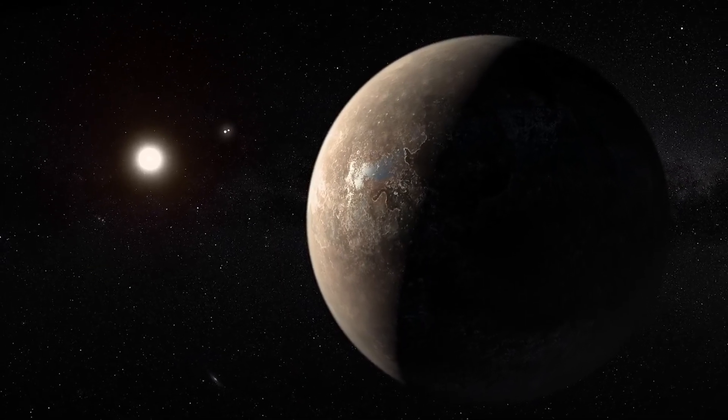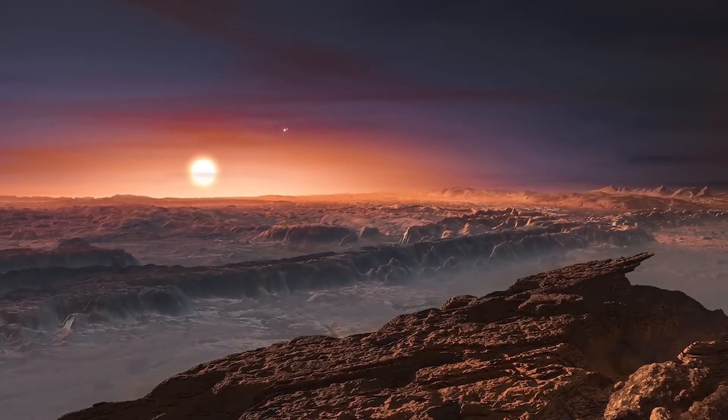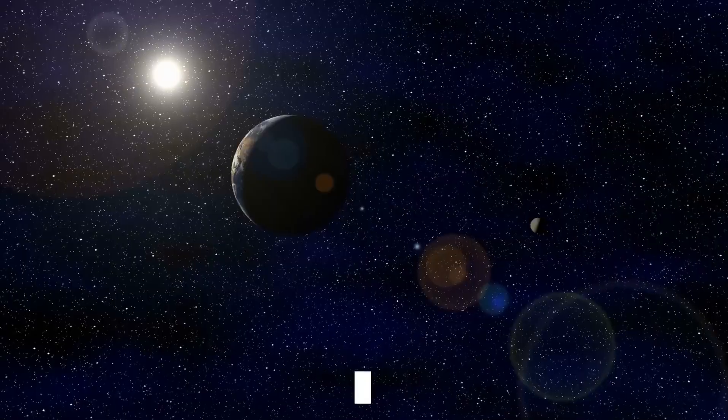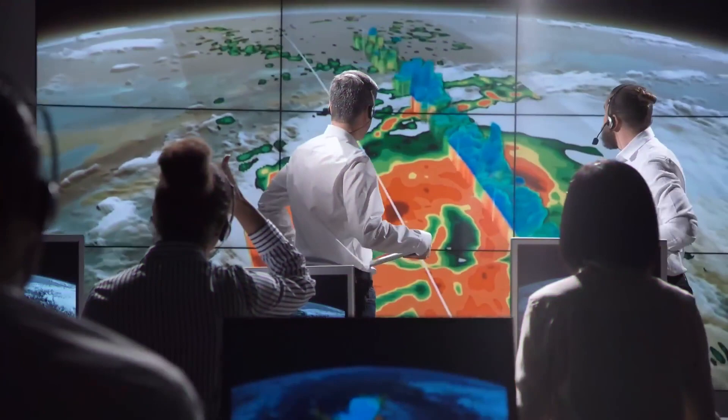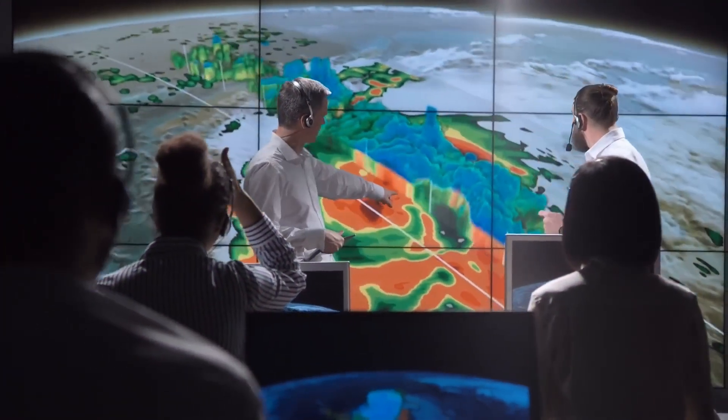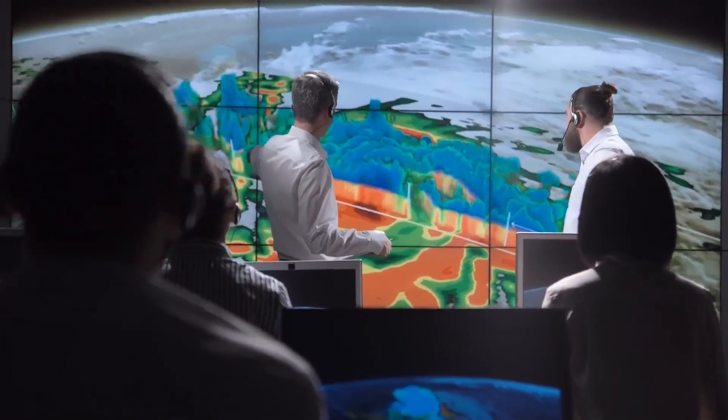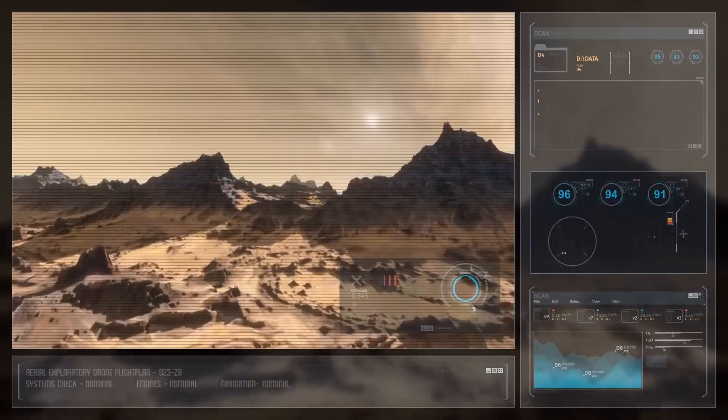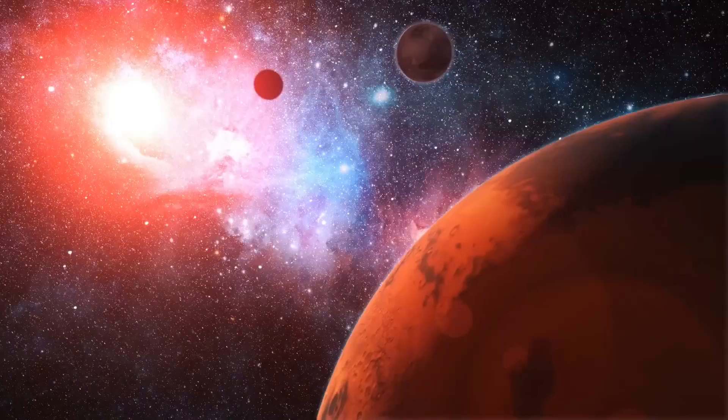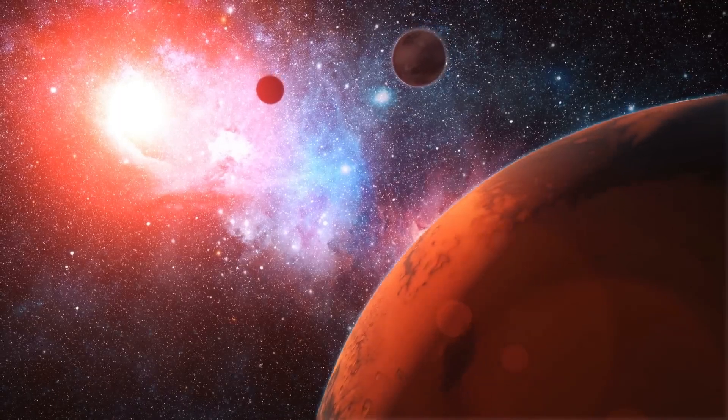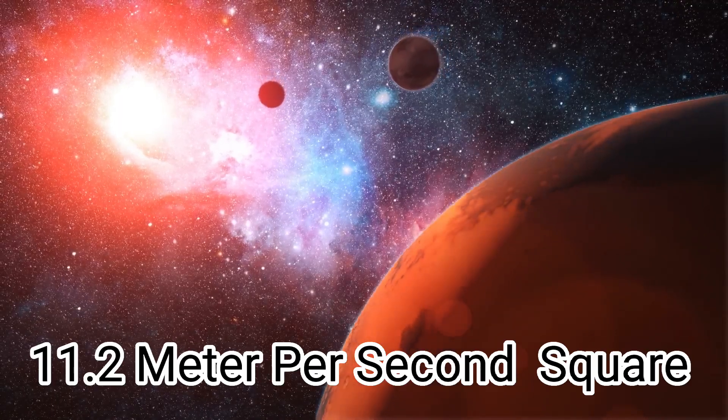Before we get into more details about this outstanding discovery, one fundamental question is what I would like to address. What about gravity on the planet? I know that is what you all have been wondering, and the answer to that is like the Earth, Proxima b will produce gravity. Proxima b is 1.3 times that of the Earth. Proxima's gravity, according to research, could be 11.2 meters per second squared.